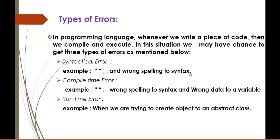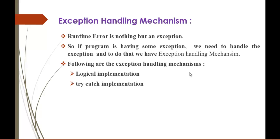Now that we understand the types of errors, we will jump into exception handling mechanism. What is exception handling mechanism? Runtime error is nothing but an exception — it is an error. If a program is having an exception, we need to handle it, and to do that we need a mechanism called exception handling mechanism. There are two exception handling mechanisms: one is logical implementation and one is try-catch implementation.